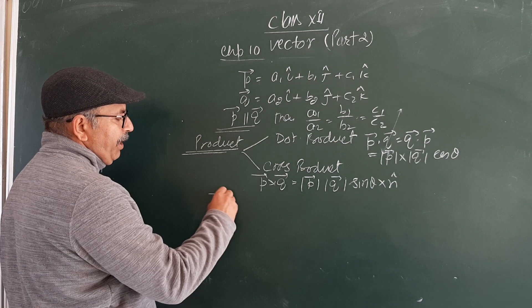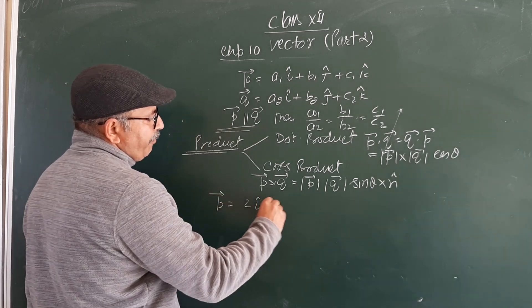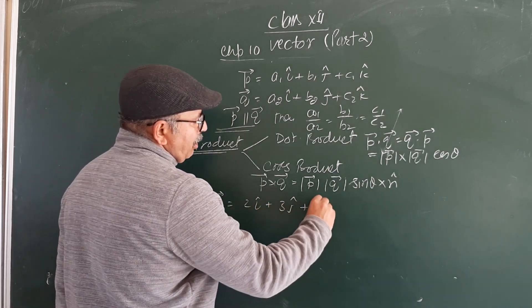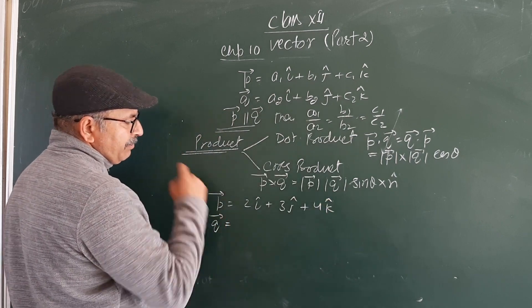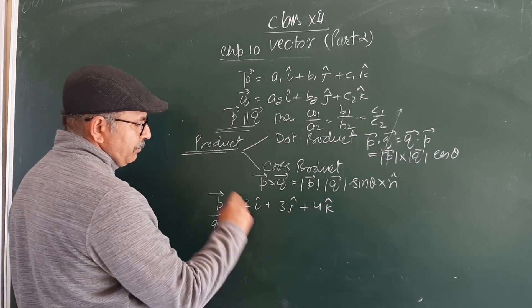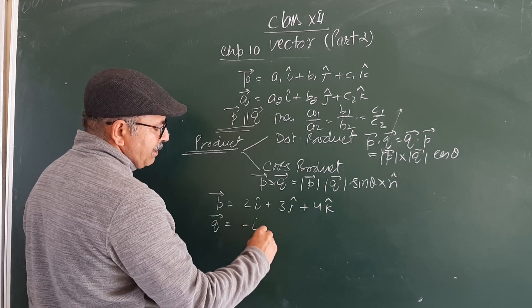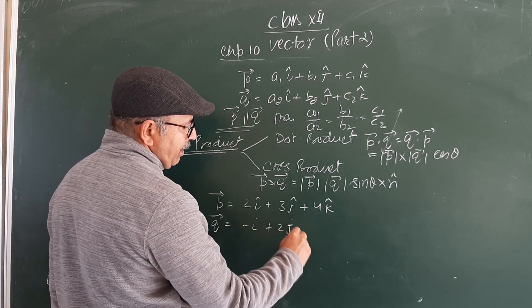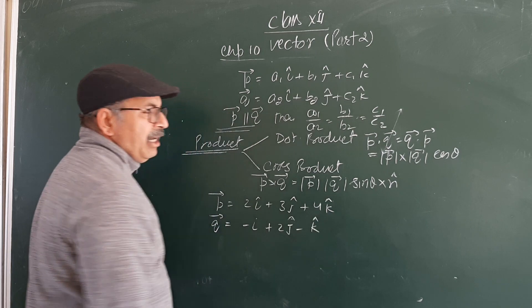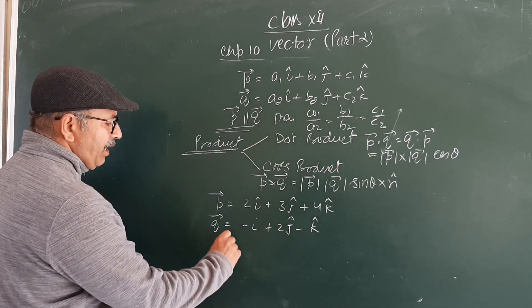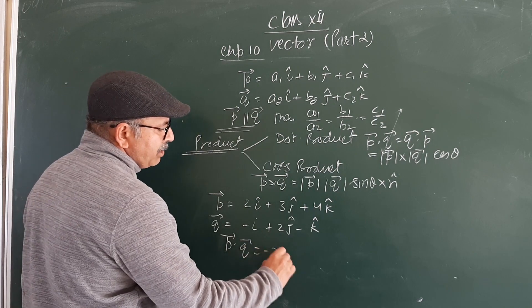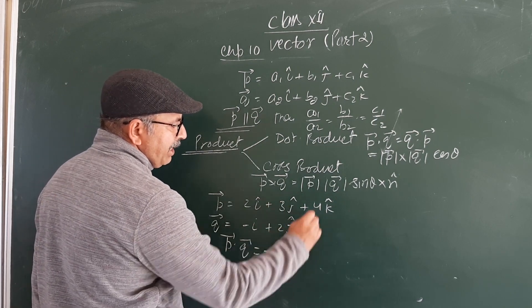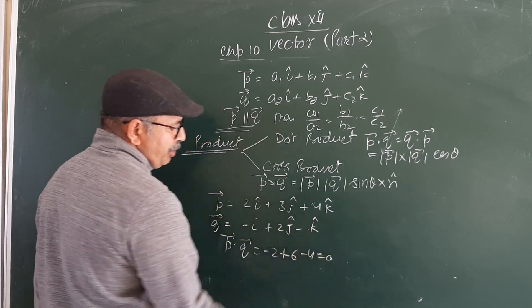If P dot Q, then ii minus 2, jj is 6, minus 2 equals 0.